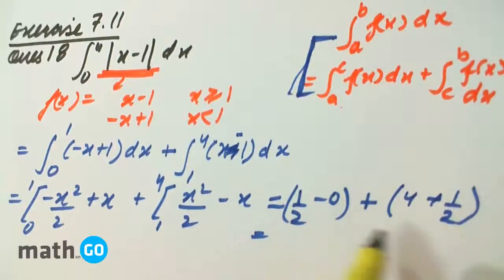So our answer is 1 by 2 plus 1 by 2... 1... 5.